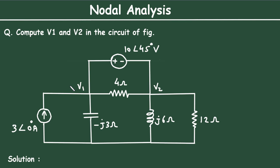As we can see, there is a voltage source between V1 and V2, so this forms a super node. This is a super node problem.